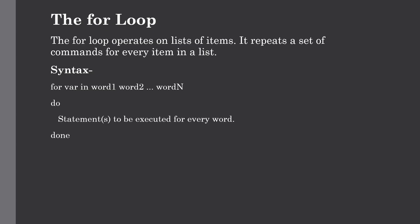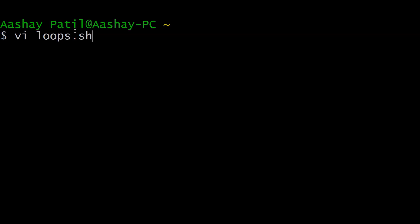Our next loop is the for loop. The for loop operates on a list of items — it repeats a set of commands for every item in the list. The syntax uses 'for', a variable name 'var', and a list of words. The set of commands will be executed on all characters in the list. Each time the for loop executes, the value of 'var' is set to the next word in the list.